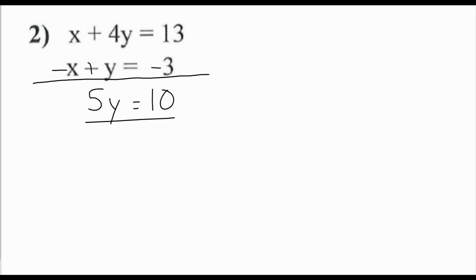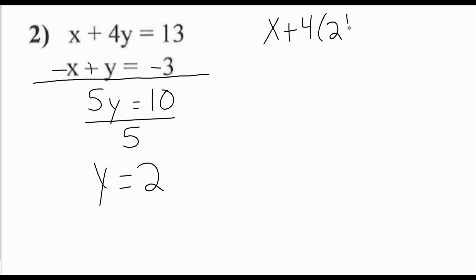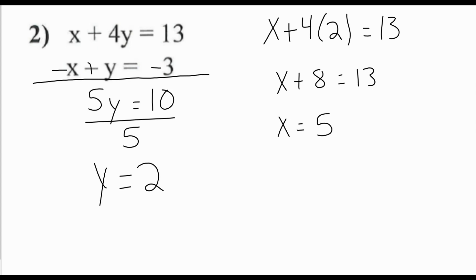Dividing everything by 5 gives y equals 2. Plugging y equals 2 back into the first equation: x plus 4 times 2 equals 13, so x plus 8 equals 13. Subtracting 8 gives x equals 5. So the solution to this system is (5, 2).